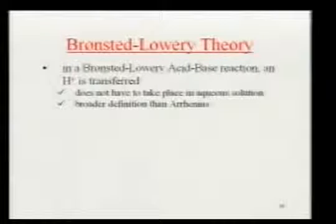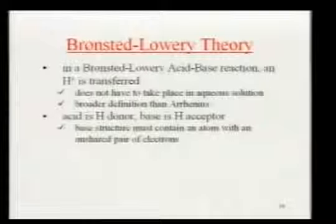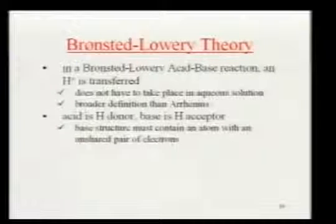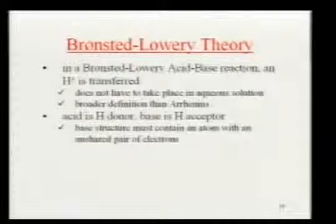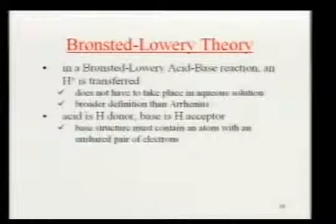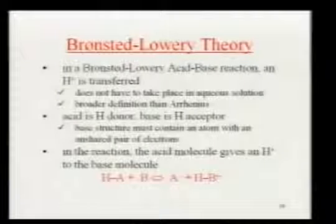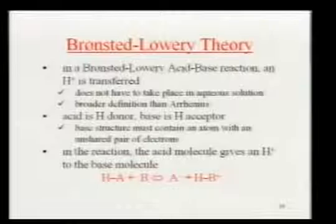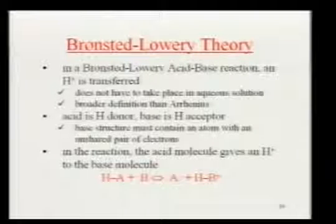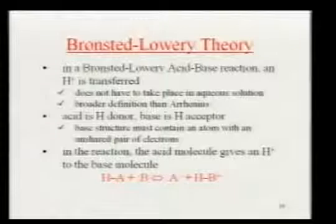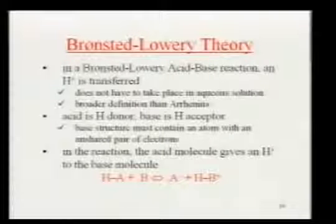It's a much broader definition. By this theory, an acid is a hydrogen donor and a base is a hydrogen acceptor — we leave out the hydroxide part. A base is anything that can absorb or grab a hydrogen, and an acid is something that gives off that hydrogen. So if you have an acid like HCl and a base like hydroxide, the base grabs that hydrogen and leaves the anion by itself.